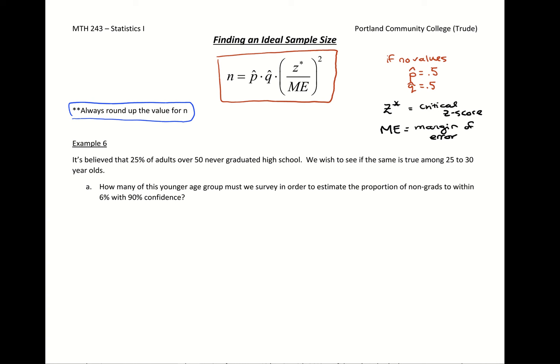So let's look at this example here. It's believed that 25% of adults over 50 never graduated high school and we wish to see if the same is true among 25 to 30 year olds. So if we're assuming it's true, then we're going to assume if we take a sample proportion it would be p̂=0.25, which means q̂ would be 0.75. So that's the information we get out of that sentence.